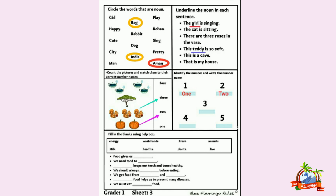Now see the second question: identify the number and write the number name. We have to recognize the numbers and write their names. Humayin number ko pahchana hai aur number names write karna hai. So we will speak up number names from 1 to 10.